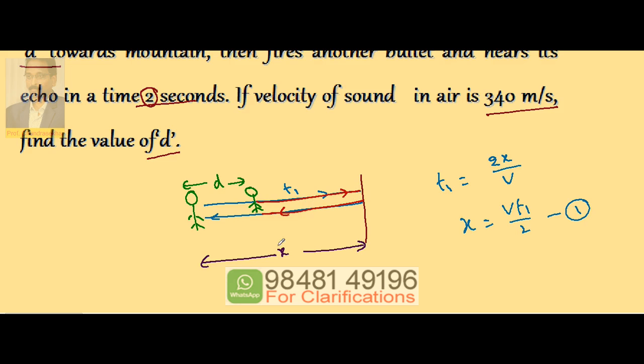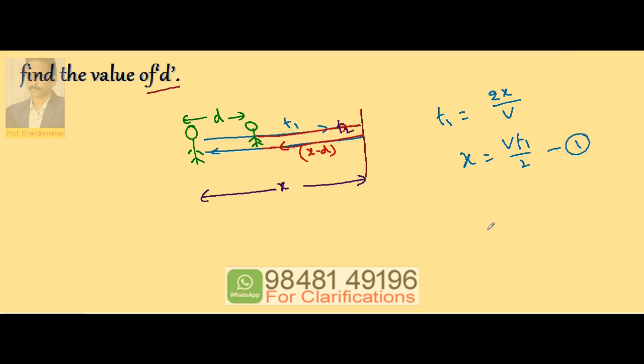...and comes back. Total is x, so this is already d, so remaining is x minus d. The time taken for this one is given as t2. So if I use the similar equation, t2 becomes equal to 2 times (x minus d) by v. Because here it is covering only x minus d distance, vt2/2 is equal to x minus d.